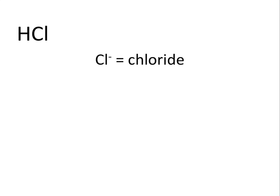For example, when we look at HCl, we know that Cl⁻ is named chloride. So we would name this acid hydrochloric acid, changing the -IDE ending to -IC and adding hydro- as a prefix.